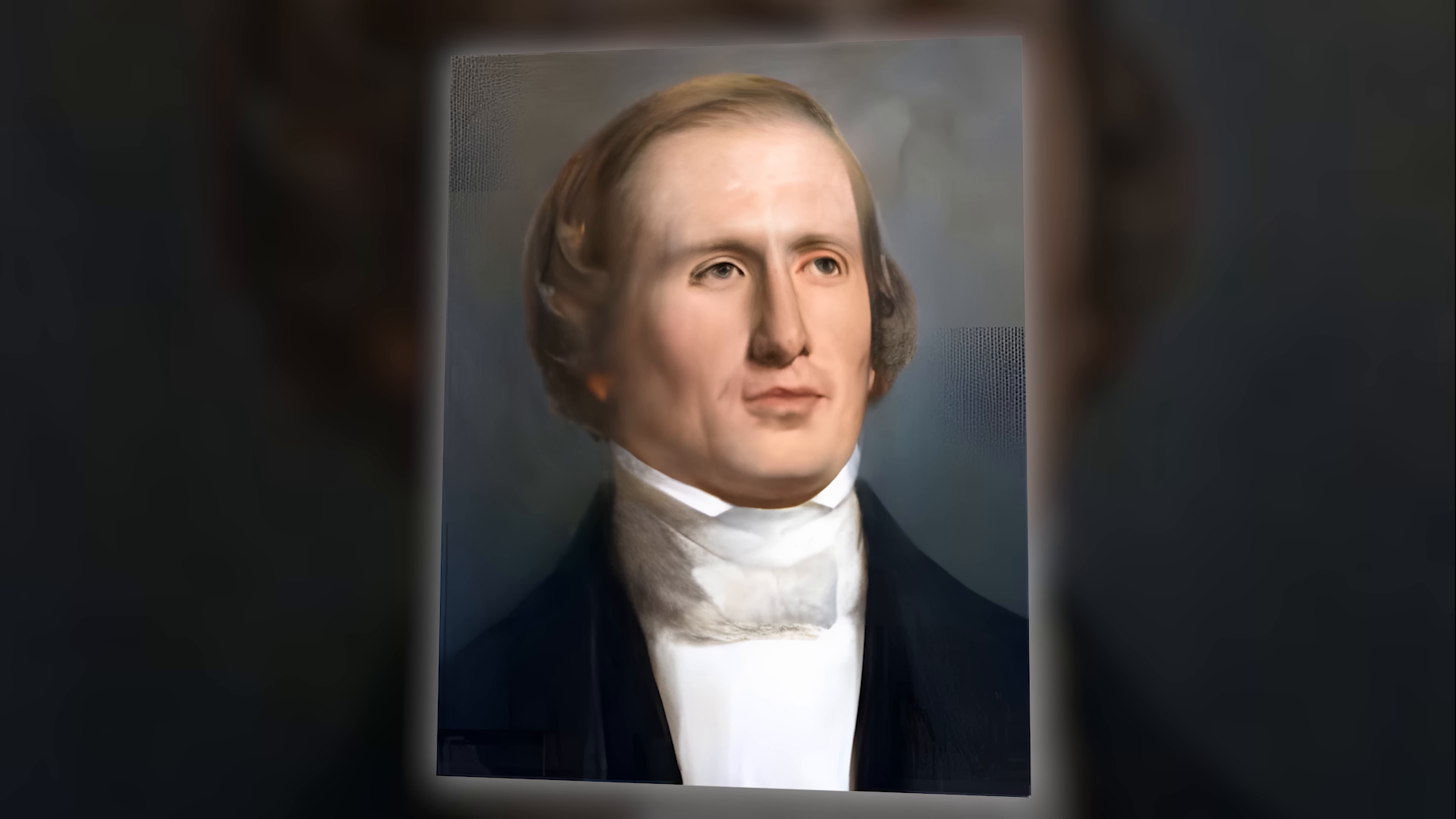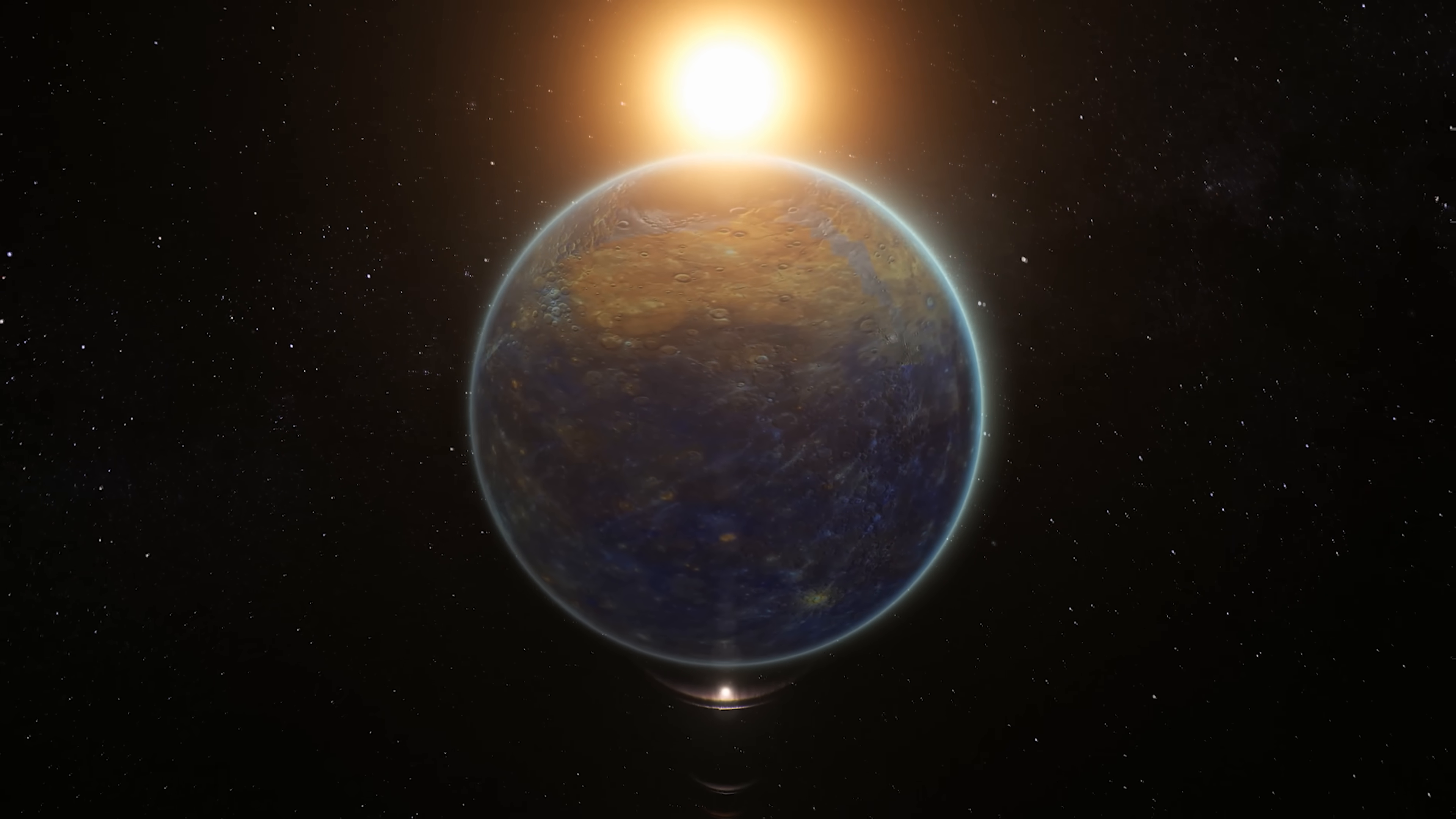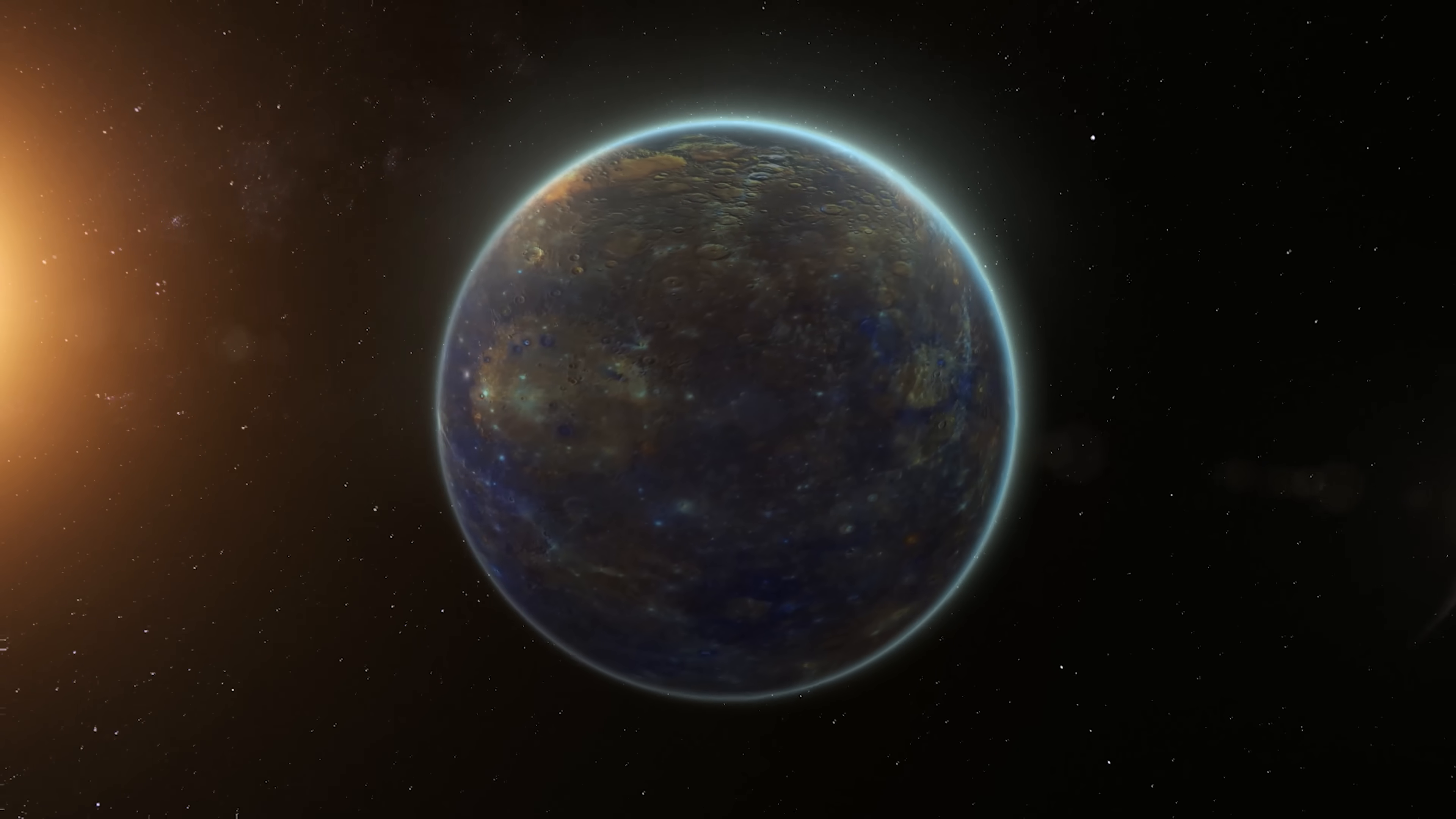In 1859, the French mathematician Urbain Le Verrier, famous for predicting the existence of Neptune, observed that Mercury's orbit had an anomaly. Its perihelion, the closest point to the Sun, was moving faster than the laws of Newtonian physics predicted.